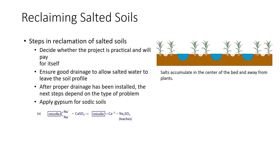The first step in reclamation of salted soils is to decide whether the project is practical and will pay for itself. The basic step to reclaiming soil is to leach out salts, so there must be a source of acceptable water. Very fine-textured soils may not allow sufficient drainage. If a decision is made to reclaim the soil, the next step is to ensure good drainage to allow salt water to leave the soil profile. After proper drainage has been installed, the next steps depend on the type of problem. Saline soils are most easily reclaimed. Growers flood the soil surface so that percolation leaches salts out of the soil profile. High-quality water works best, but larger amounts of fairly saline water will also work. Treatment water should, however, be low in sodium.